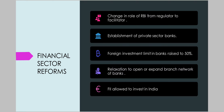Foreign investment limit in banks was raised to 50%. There was a relaxation to open or expand the branch network of banks with certain restrictions. Foreign institutional investors like merchant bankers, mutual funds, and pension agencies were allowed to invest in India.